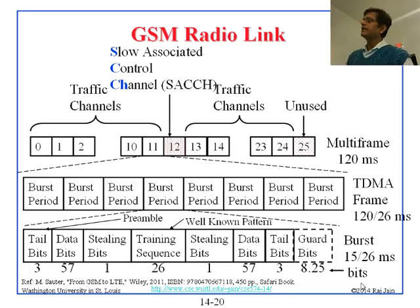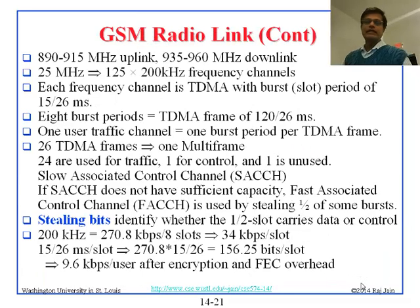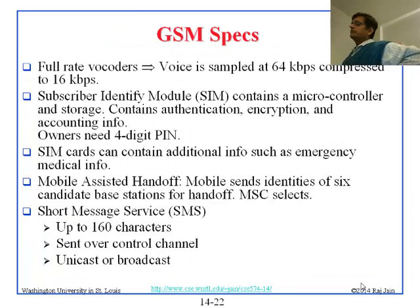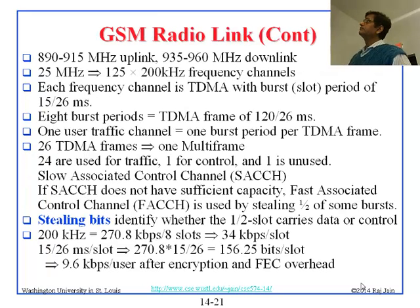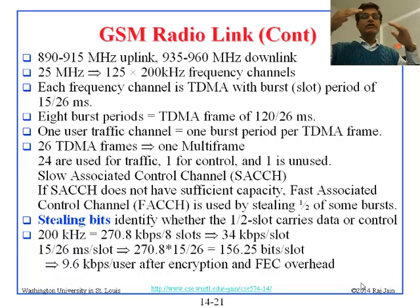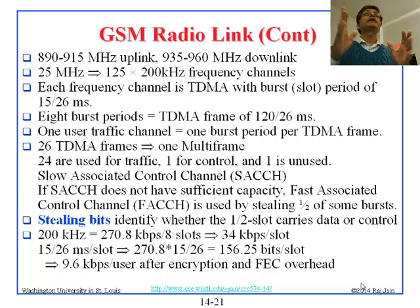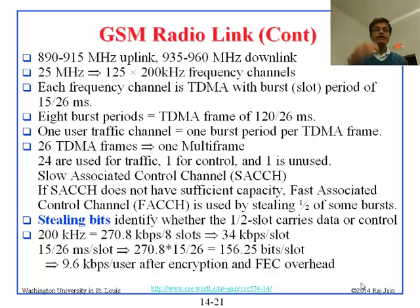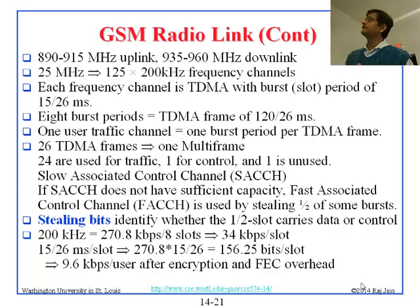We had almost covered this slide, so let us go back to the next line and see if everything is covered. Basically, just an example: if you are in the 890/800 megahertz band, then there are two links — uplink and downlink. 25 megahertz was allocated for downlink and 25 megahertz for uplink, 50 megahertz total. That 25 megahertz is divided into 125 channels of 200 kilohertz each.